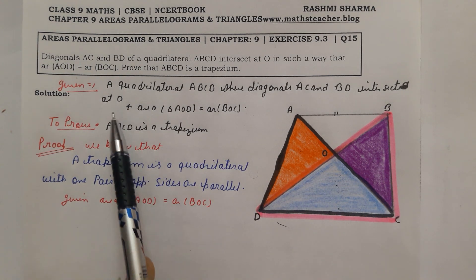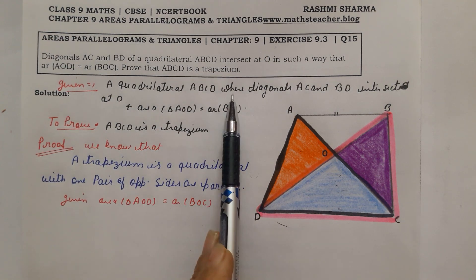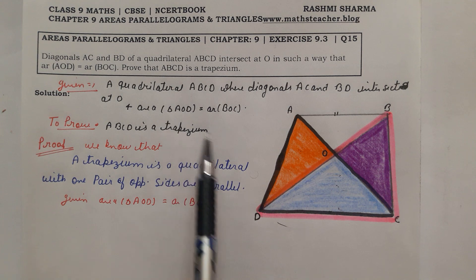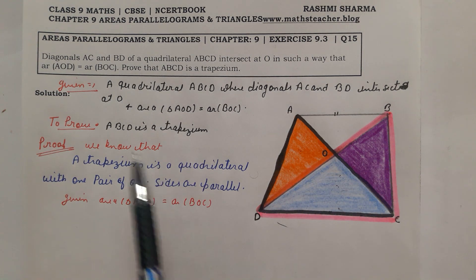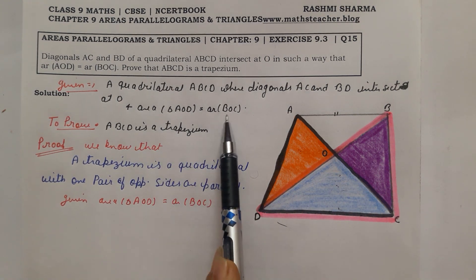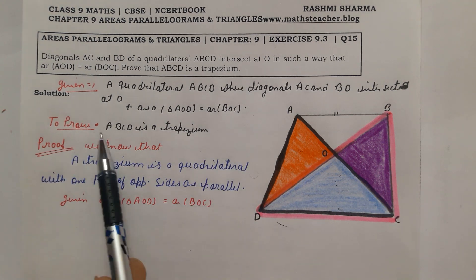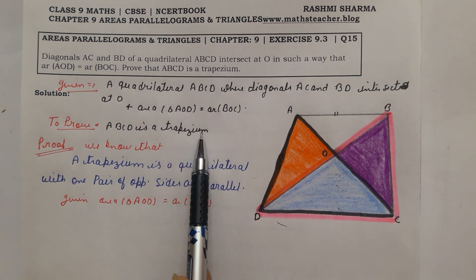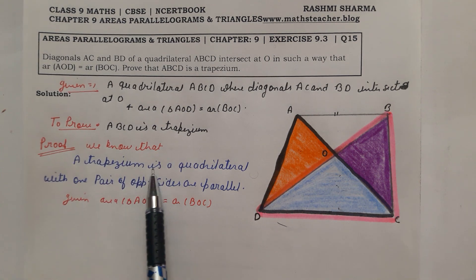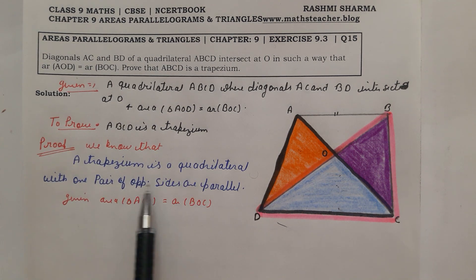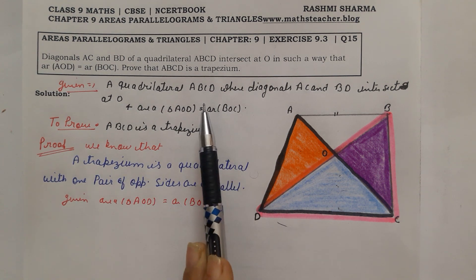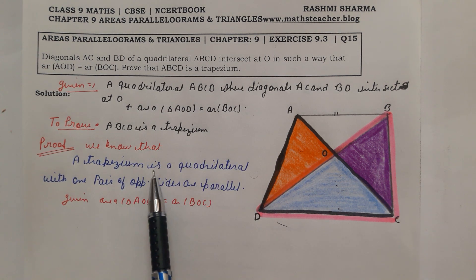Now let's write the solution. Given: a quadrilateral ABCD where diagonals AC and BD intersect at O, and area of triangle AOD equals area of triangle BOC. To Prove: ABCD is a trapezium. Proof: We know that a trapezium is a quadrilateral with one pair of opposite sides parallel.